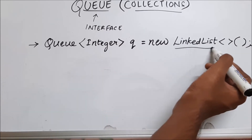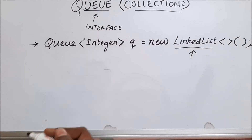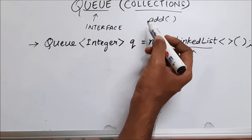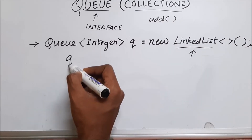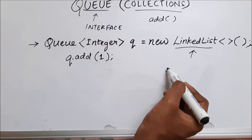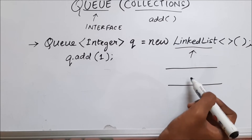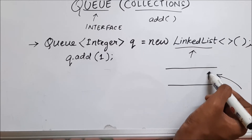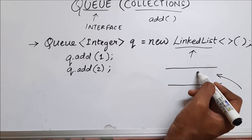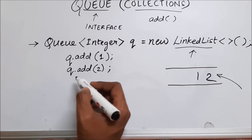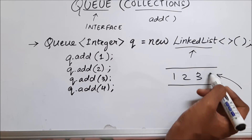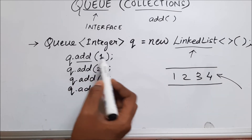We can also use something called PriorityQueue in this place, but let's not get into that. Now let's see a few methods in queue. The first one is the add function. Using this method, we add values inside the queue. So if I say queue.add(1), the value one is added from the rear into the queue. Adding two will place it at the rear as well. These are the values inside the queue, and this is the method add to add values.